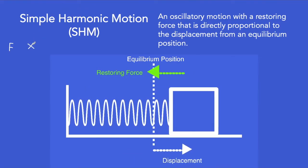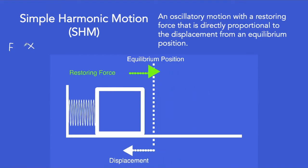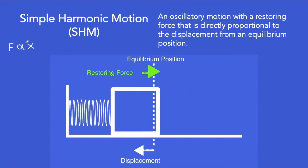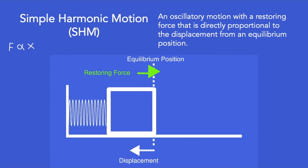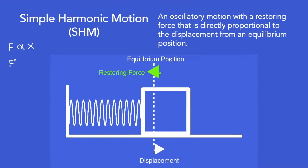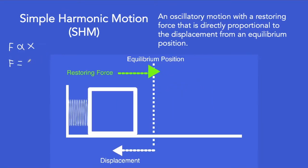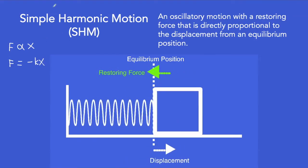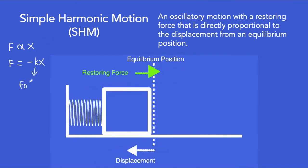In terms of equation, F is equal to negative k times x, where k is what we call the force constant.